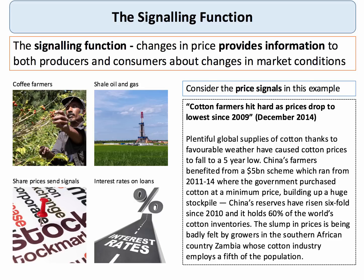If there's too much supply in the market, prices tend to fall and that helps to eliminate the surplus by allowing consumers to buy more and also by incentivising producers maybe to supply less. There are lots of good examples of where the price mechanism sends signals. If there's a fall in the world price of coffee, it sends a signal to some coffee farmers that they might be better off ripping up their coffee plantations and starting to produce other products instead. The fall in the price of oil in the last 12 months has caused some significant signalling effects in the market for shale oil and gas in the United States, Canada, and elsewhere, but also in the profit motive in the renewable energy industry.